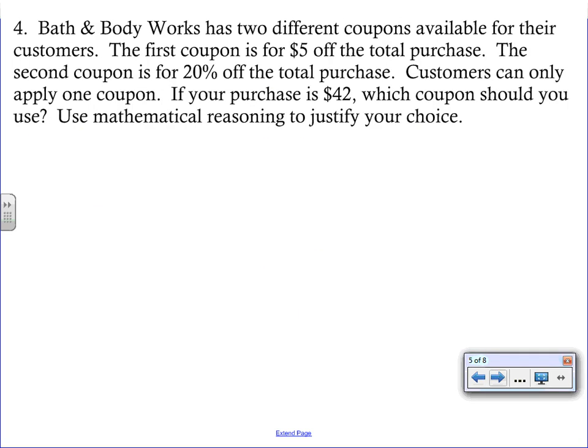Next question: Bath and Body Works has two coupons — $5 off the total purchase, or 20% off the total purchase. Customers can only apply one. If your purchase is $42, which coupon should you use? Use mathematical reasoning to justify your choice — show all your work. For coupon one, it's simple: $42 minus $5 equals $37.